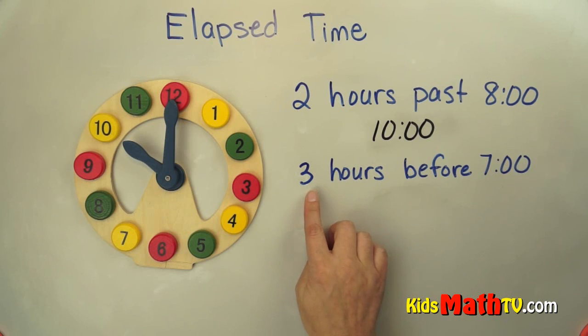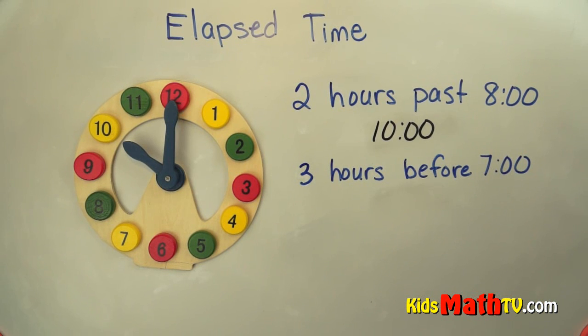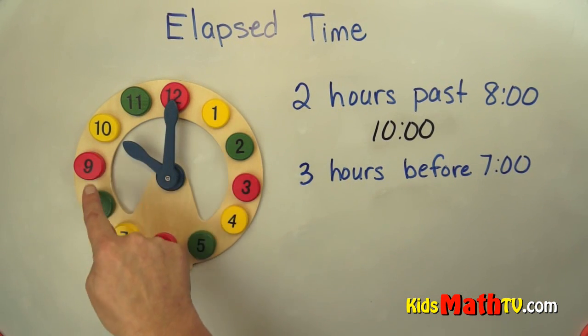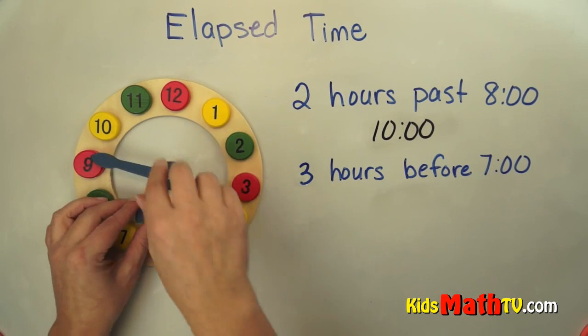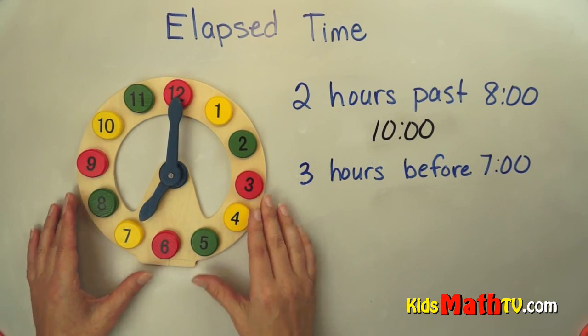This one is what is three hours before seven o'clock. So what time was it three hours before seven o'clock? And in this case we're actually going to go counterclockwise. Okay, so we'll start at seven o'clock. So there's seven o'clock.